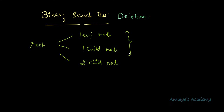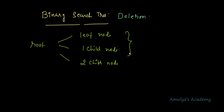When the root node is a leaf node, that means the binary search tree contains only one node. In the program, if the user tries to delete a node when the tree contains only one node, I'll print a message saying you can't perform the deletion operation. I won't perform deletion when the root node is a leaf node.